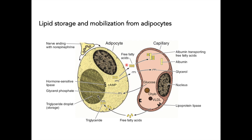The hormone-sensitive lipase hydrolyzes the stored triglycerides to release free fatty acids. These free fatty acids diffuse into the capillaries and are carried in the blood by albumin, which transports them throughout the body for use as an energy source. Remember: lipoprotein lipase is in the capillaries; hormone-sensitive lipase is in the adipocyte.